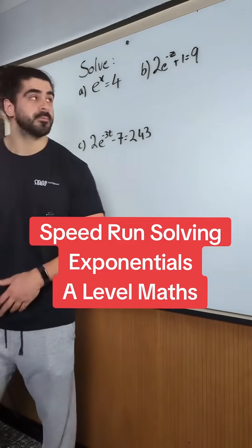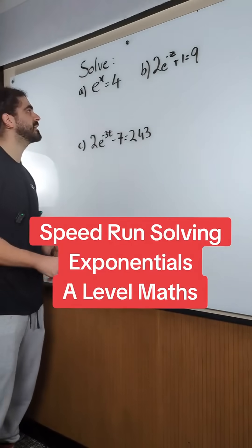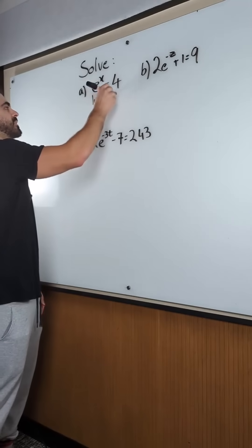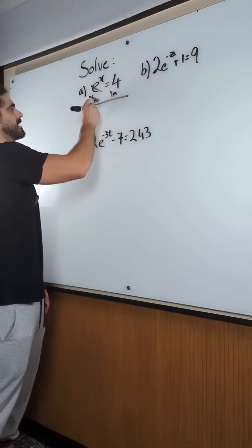Speedrun natural logarithms. So first question, solve e to the x equals 4. The inverse of e is natural log, so we're going to take the natural log of both sides. X equals ln 4.